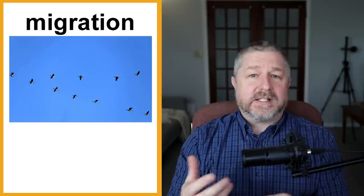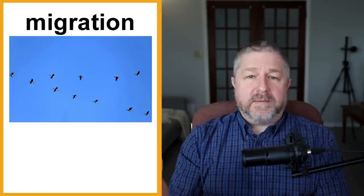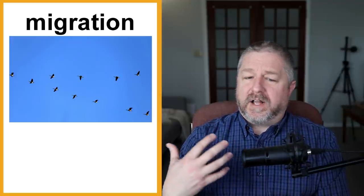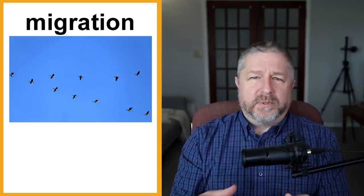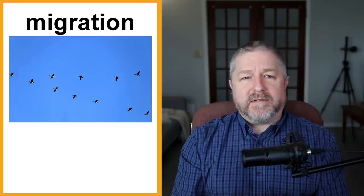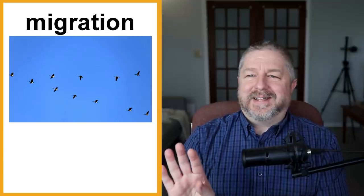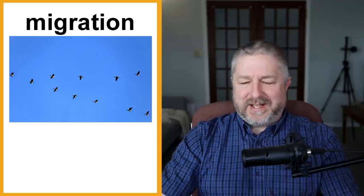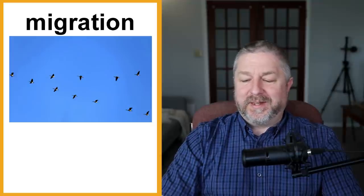I talked about how the birds have returned. There are birds that fly south for the winter — birds that live in my area throughout spring, summer, and fall, and then they fly south. There is a migration: birds migrate. Not all birds, but a lot of birds migrate south. In the winter we have some birds, but some birds have gone. They're kind of like people — they go where it's warm in the winter. I think some birds just don't like cold weather.